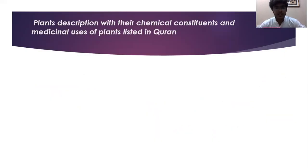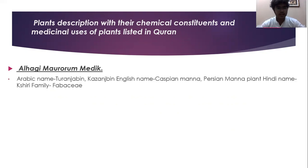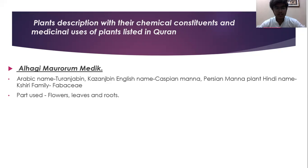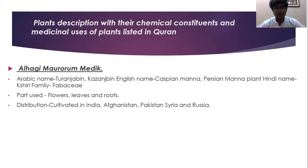Plants description with their chemical constituents and medicinal uses of plants listed in the Quran. First: Alhagi maurorum Matic. Arabic name: Turaj Jabin / Kazaj Jabin. English name: Caspian Manna / Persian Manna. Hindi name: Keshiri. Family: Fabaceae. Parts used: flowers, leaves, and roots. Distribution: cultivated in India, Afghanistan, Pakistan, Syria, and Russia.